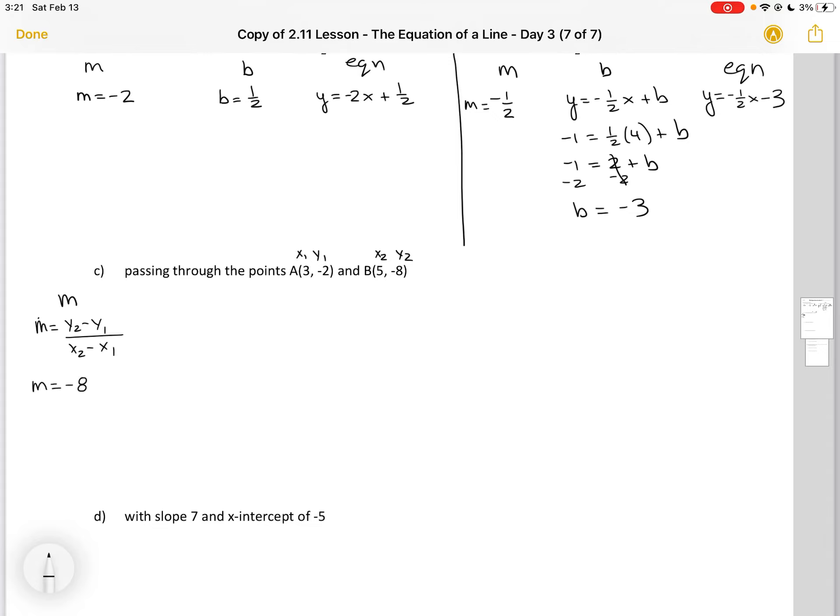Substituting in my points that I've labeled, 5 minus 3. And then I'm going to evaluate. Minus 8 minus minus 2 is minus 6. 5 minus 3 is 2. Leaves me with a slope of minus 3.